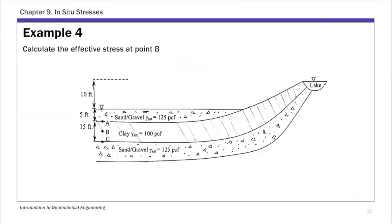This example has a more realistic soil profile. We have a sand and gravel layer at the very top, then an impermeable clay layer in the middle, and then another sand and gravel layer at the bottom.